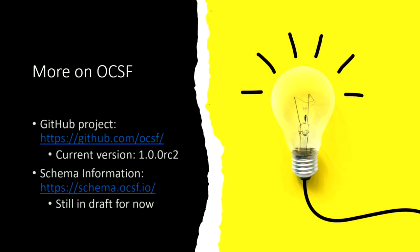If you're interested in learning more, the project is on GitHub — please come and have a look. We are almost at version 1.0; RC2 is the current version. There is a schema browser where you can browse the full schema online — it will say it's in draft until 1.0 is released. That is all I have. Thank you very much, and I'll more than happily take questions.